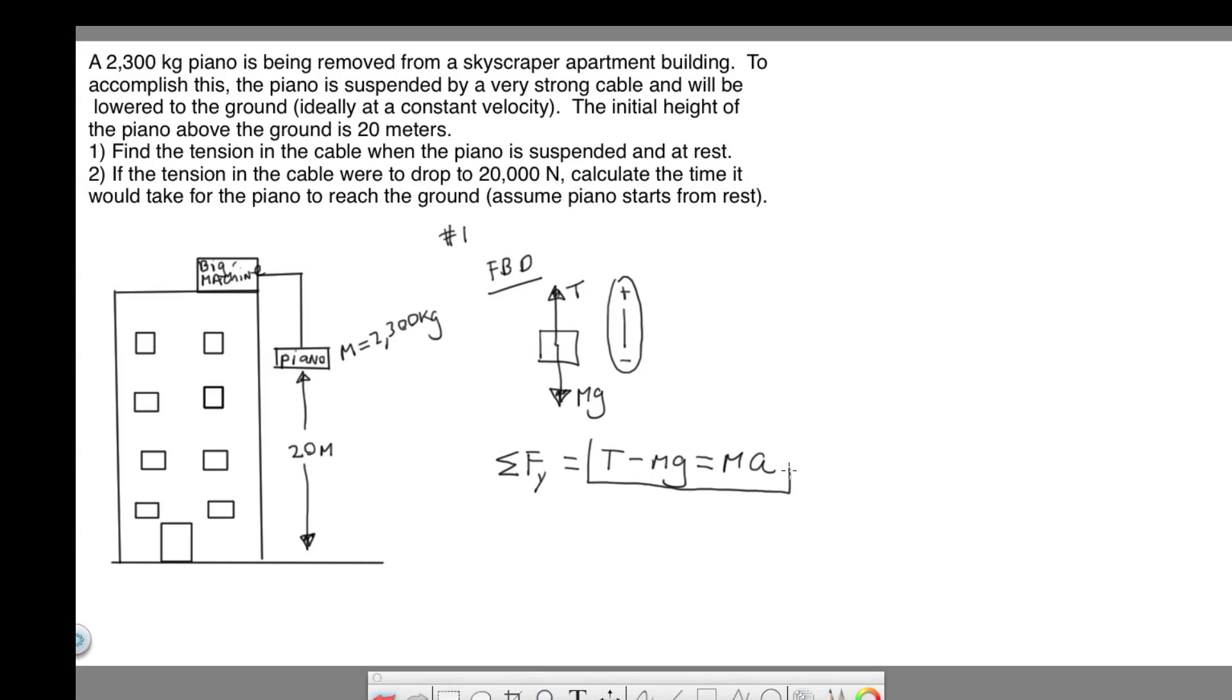This is the equation that will allow us to solve the first question. In number one, we're told that the piano is at rest. At rest means that the acceleration is zero. There is no acceleration for the first question because the piano is just hanging there.